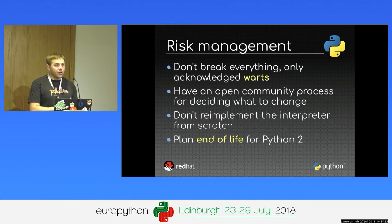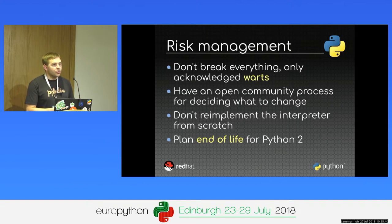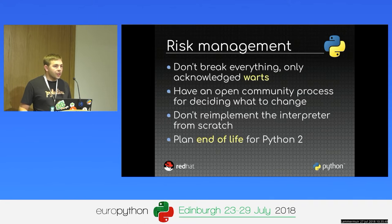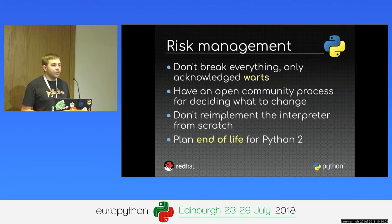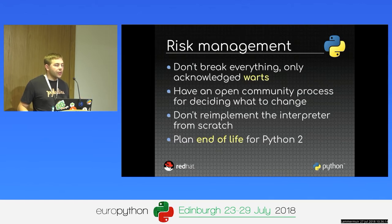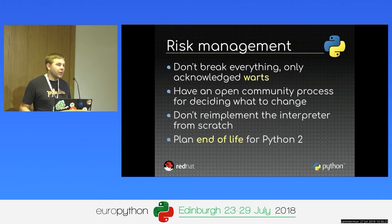To make sure Python 3 would not be a big mistake, from the very beginning of the project we tried to have risk management — to not break everything. The idea was to only change the acknowledged warts: a very short list of design issues. We also decided to have an open community process to decide what should be changed, and not to re-implement CPython from scratch, but to fork from Python 2, limiting the number of subtle changes.